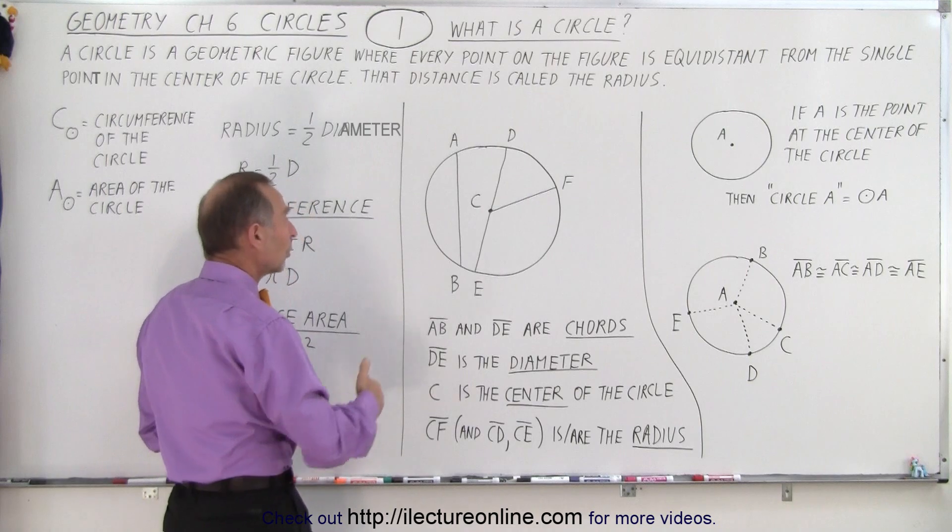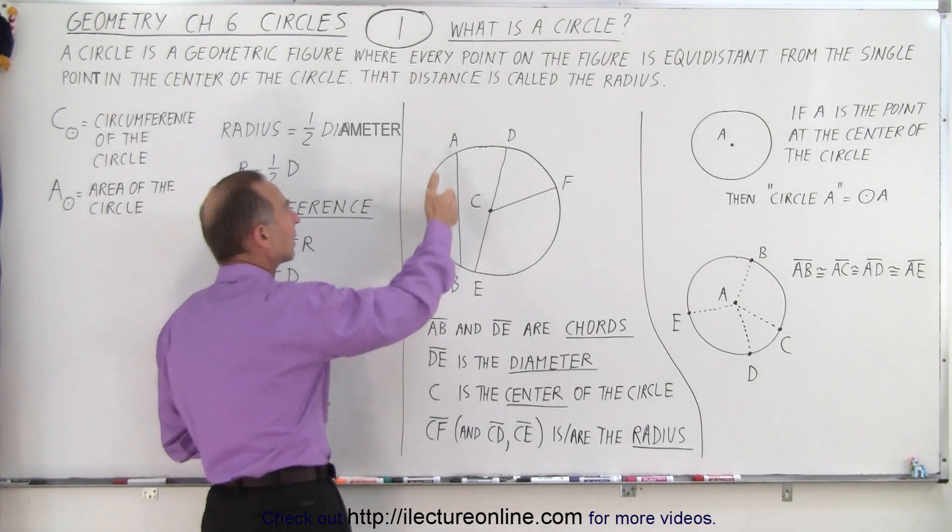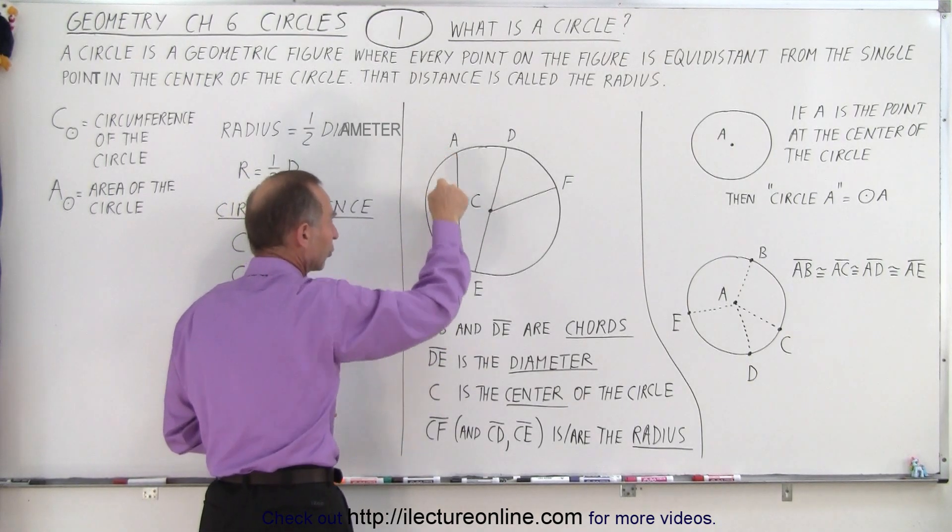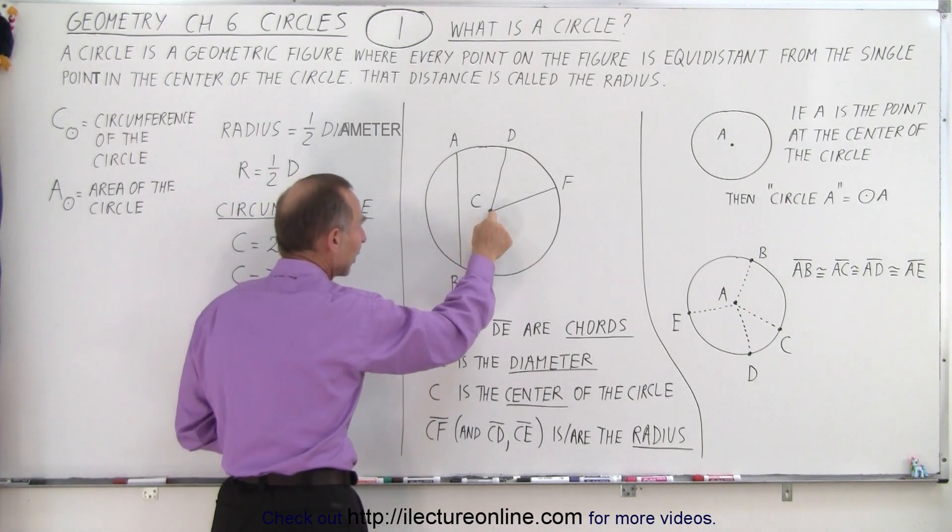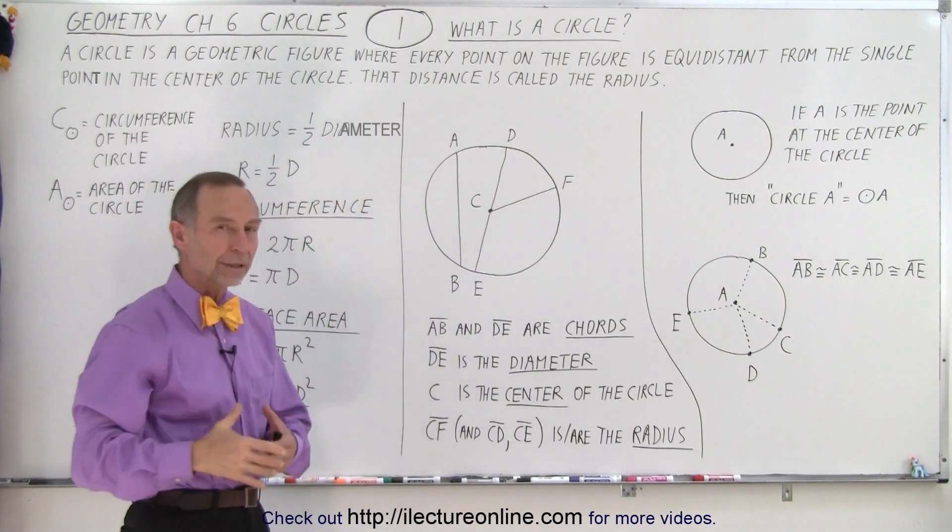Now, there's some things we need to know about the circle. For example, a line that is drawn, which is from one point on the circle to another point on the circle, but it does not go to the center of the circle, that's called a chord.